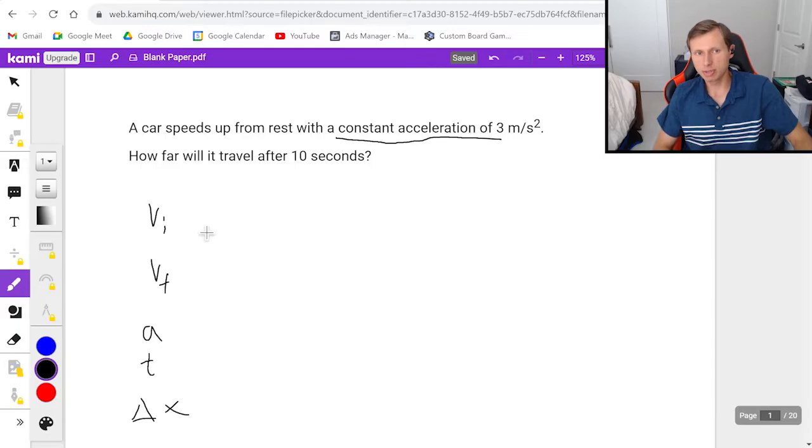So I'm going to write out my five kinematic variables and my goal is to know three of these. So v initial, the starting speed, I bet that's going to be zero because we're starting from rest. So v initial is zero. v final, I have no idea what it is and it doesn't matter. I don't need to know all five.